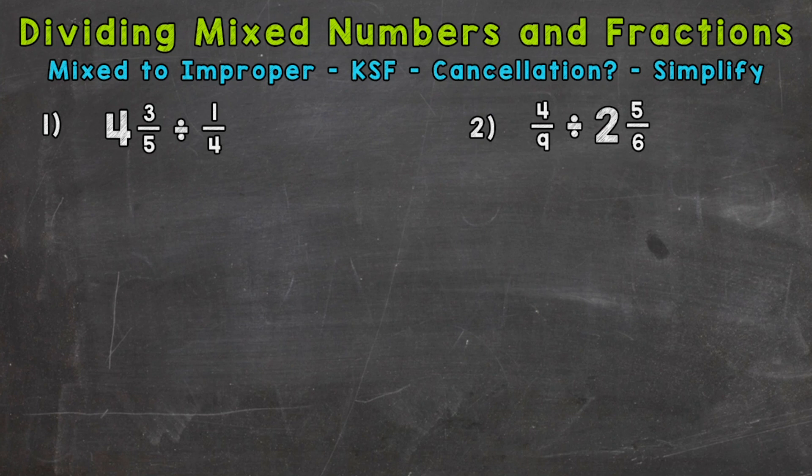The first thing we want to do with these problems is rewrite them, changing any mixed numbers to improper fractions. Let's rewrite with the mixed number as an improper fraction. We do that by starting at the bottom here and working our way up. So multiply and then add. Five times four is 20, plus three is 23. That's our numerator. We keep our denominator of five the same.